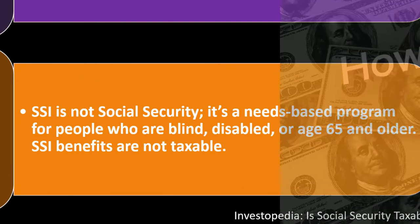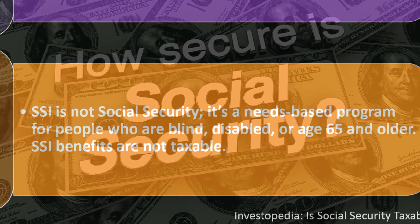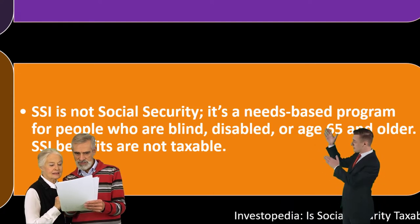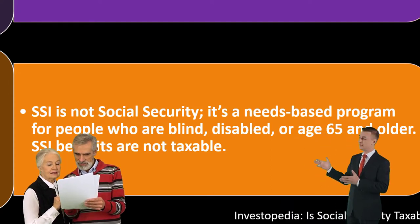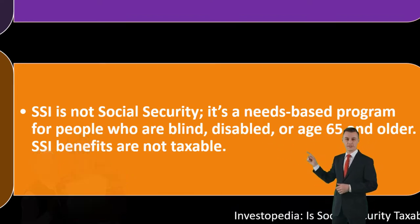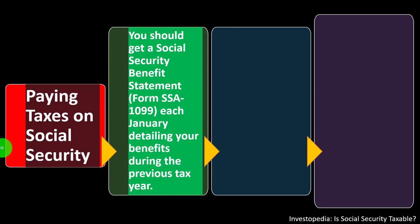SSI — Supplemental Security Income — is not the same as Social Security. It's a needs-based program for people who are blind, disabled, or age 65 and older. Unlike regular Social Security, which is shifting to be a program applicable for everyone, SSI is more of a safety-net welfare program. Because it's needs-based, SSI benefits are not taxable.